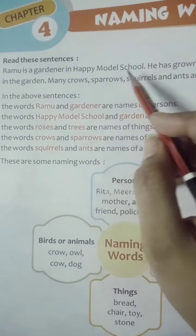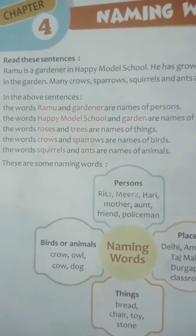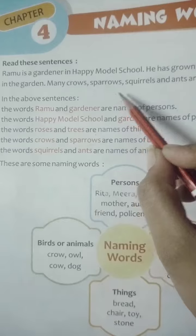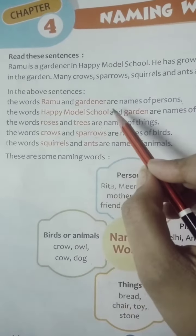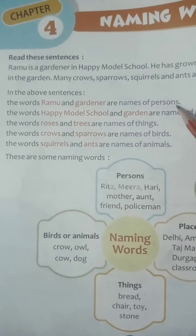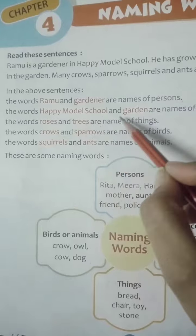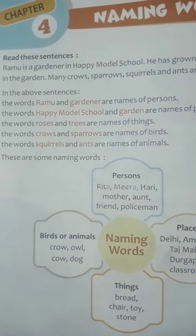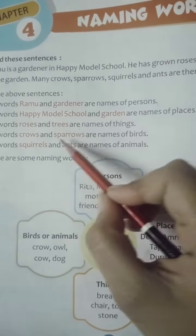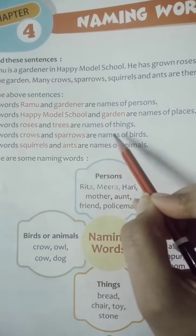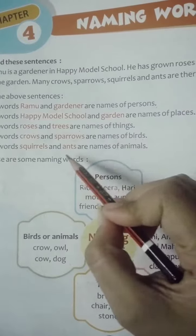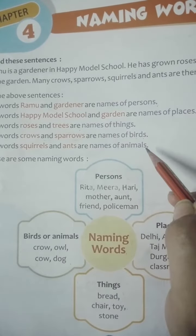Read these sentences. Ramu is a gardener in Happy Model School. He has grown roses and many trees in the garden. Many crows, sparrows, squirrels and ants are there in the garden. In the above sentences, the words Ramu and gardener are the names of persons. The words Happy Model School and garden are the names of places. Roses and trees are the names of things. Crows and sparrows are the names of birds. Squirrels and ants are the names of animals.